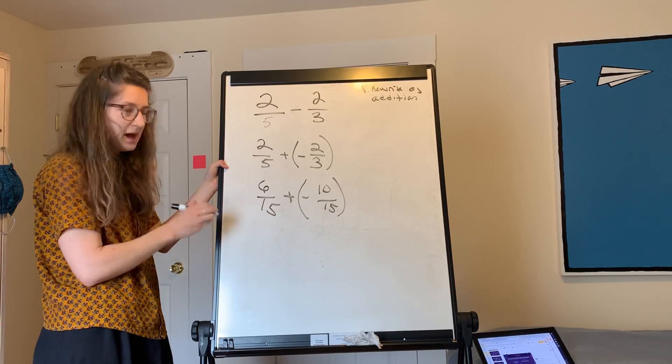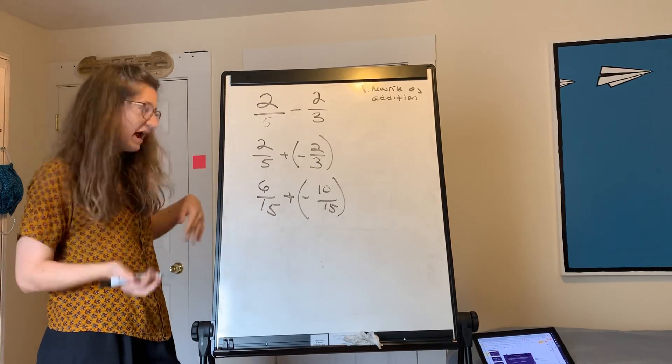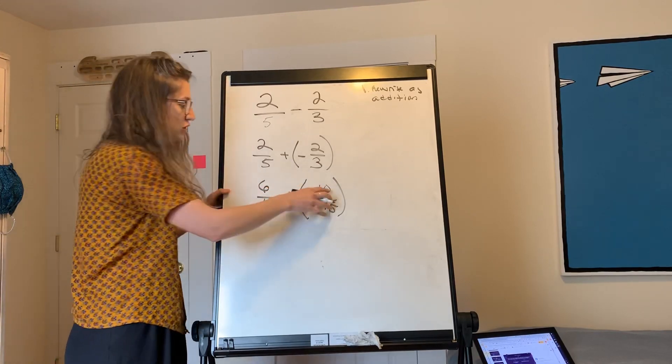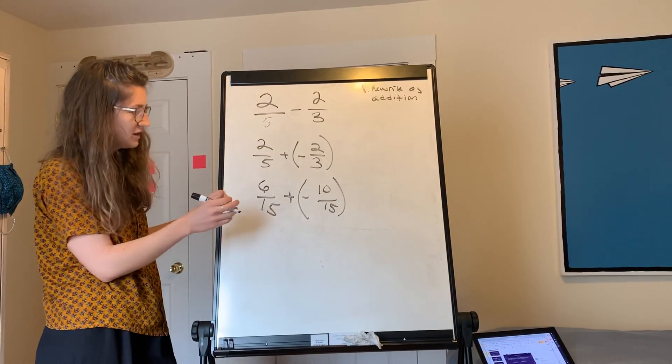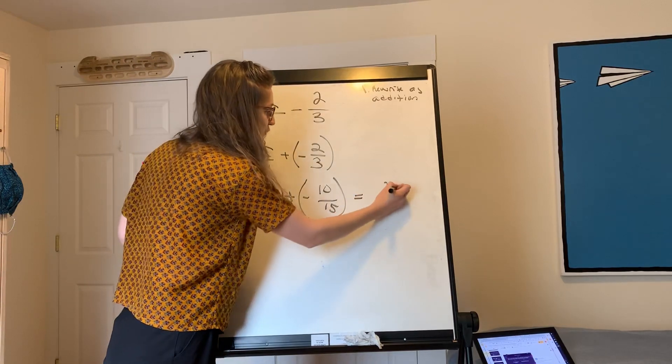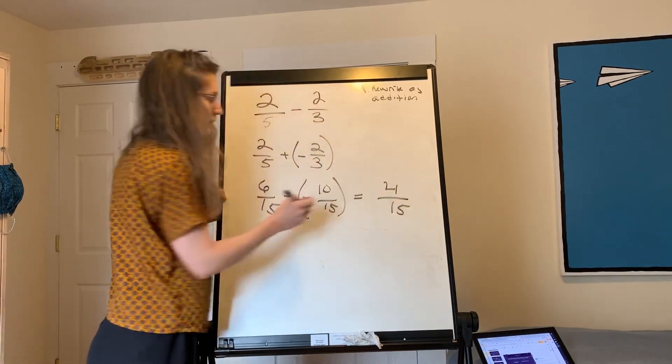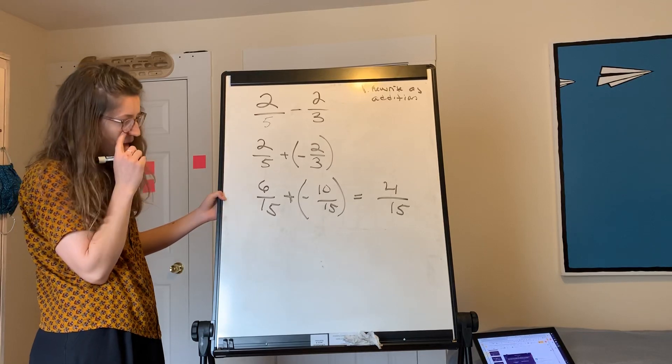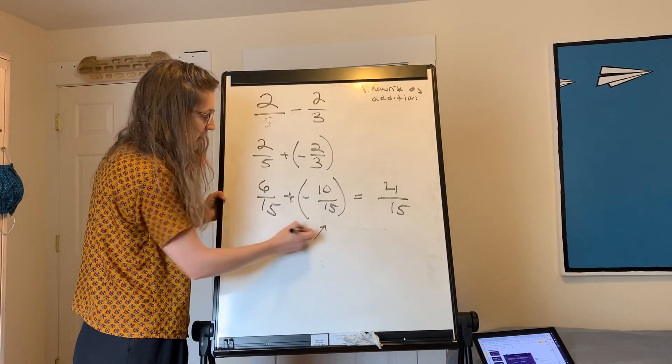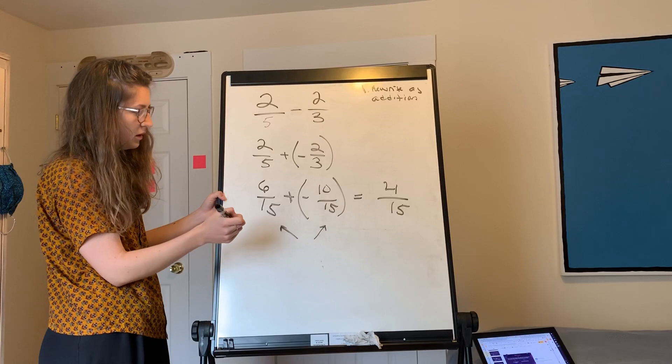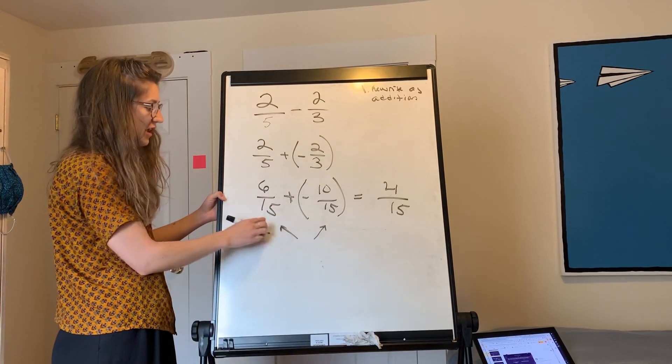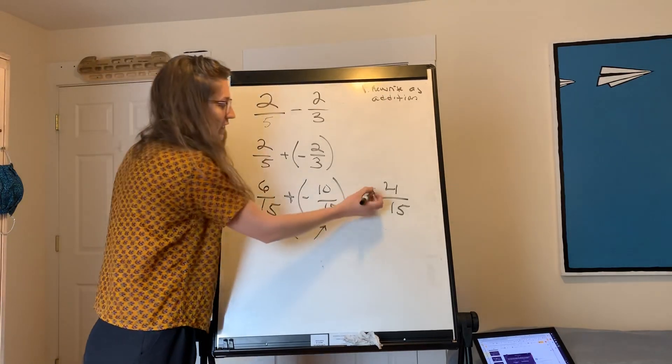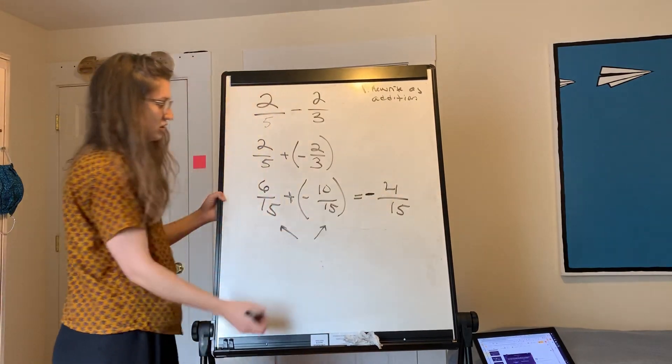And now we just need to add six-fifteenths plus a negative ten-fifteenths. When we're adding a positive and a negative, we first subtract them. We subtract the positive versions of them. So ten-fifteenths minus six-fifteenths is four-fifteenths. And is it positive or negative? Well, which of these two numbers has a bigger absolute value? Ten-fifteenths has a bigger absolute value than six-fifteenths. And since that number is negative, our answer is going to be negative.